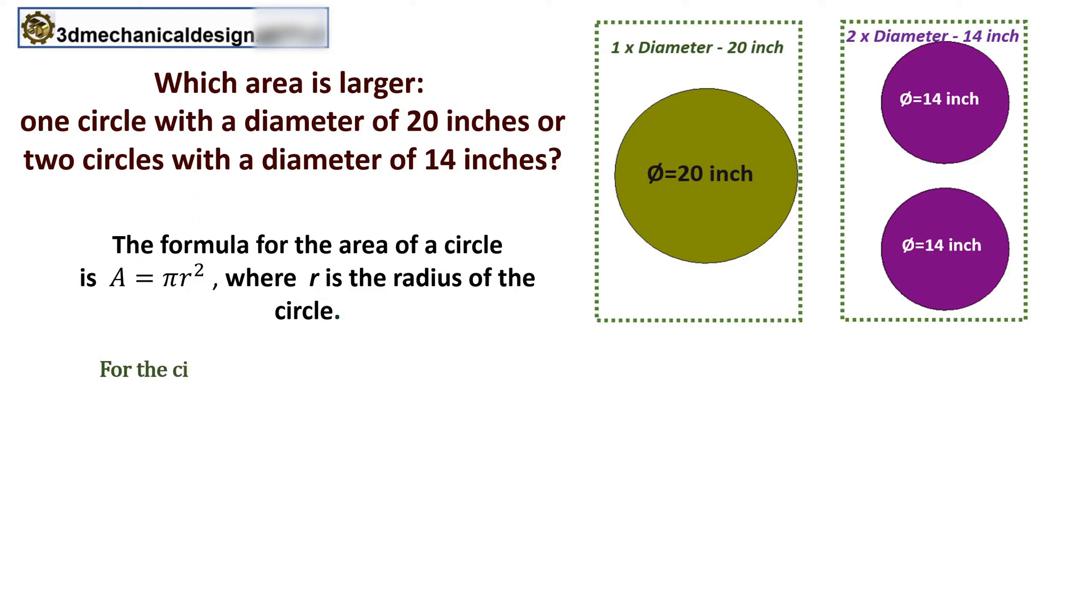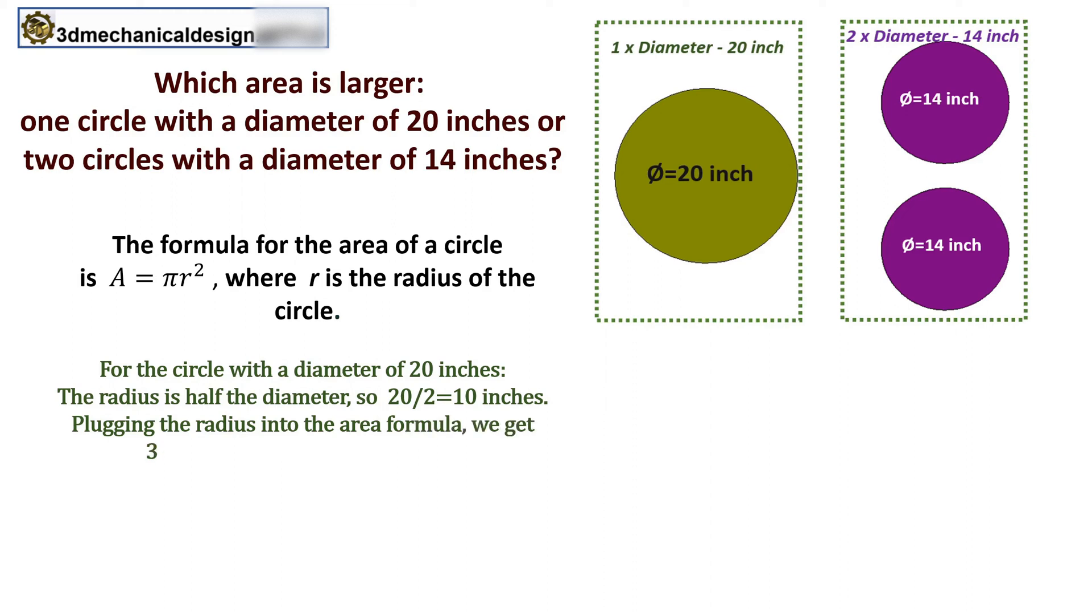For the circle with a diameter of 20 inches, the radius is half the diameter, so 20 divided by 2 equals 10 inches. We get 3.14 multiplied by 10 squared, equals 314.16 square inches.